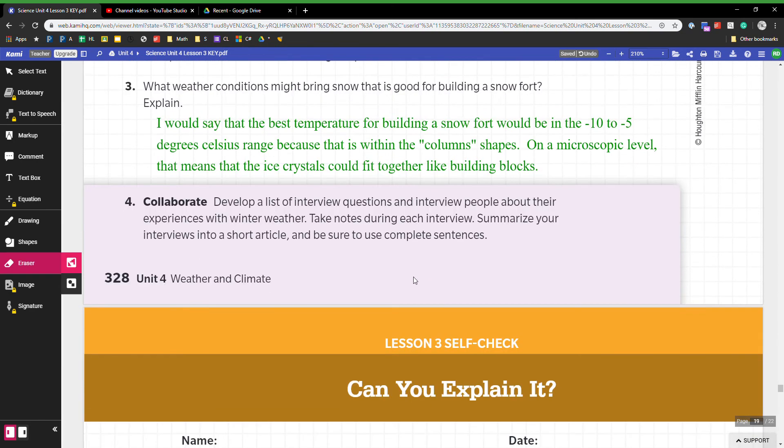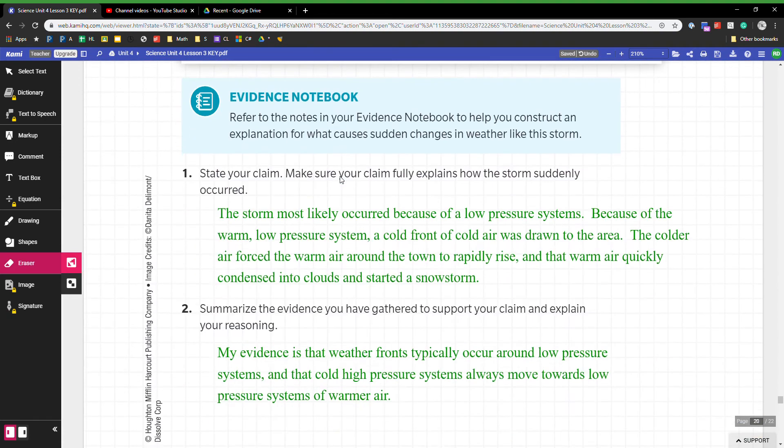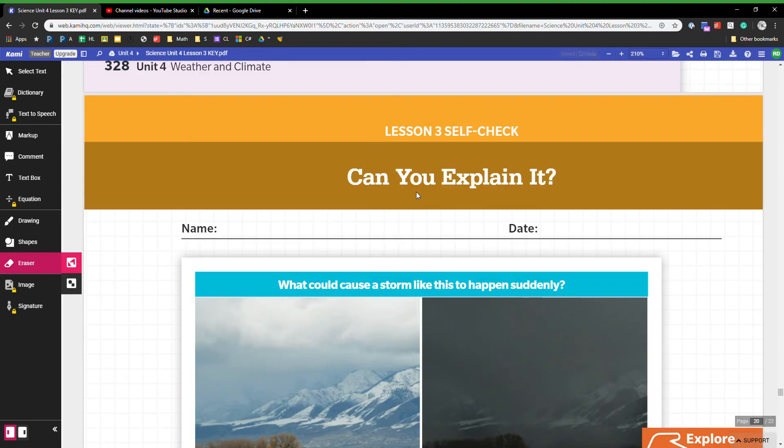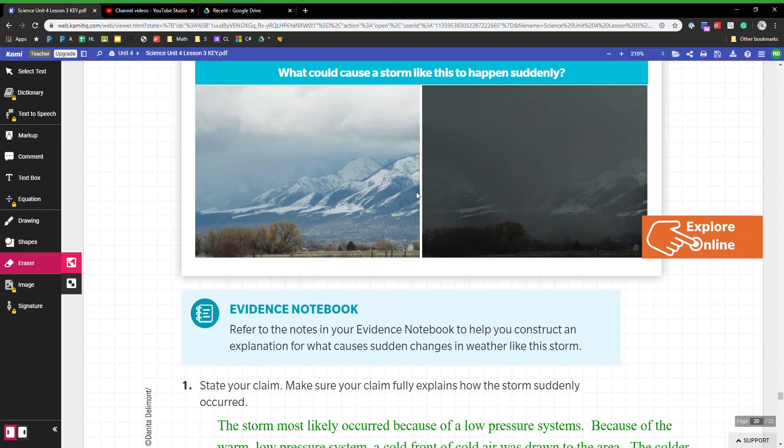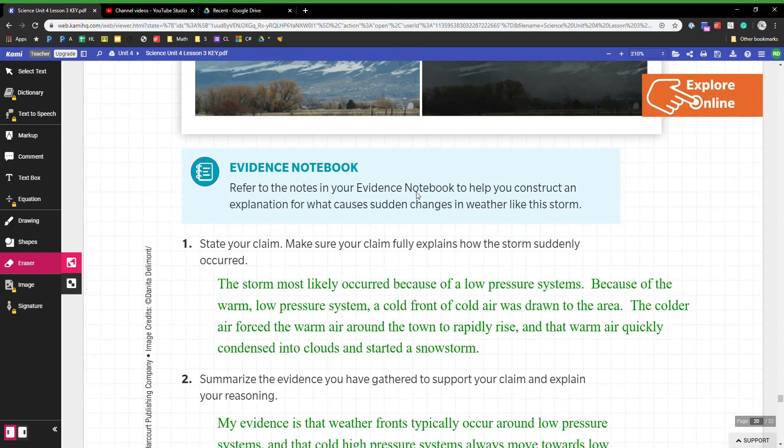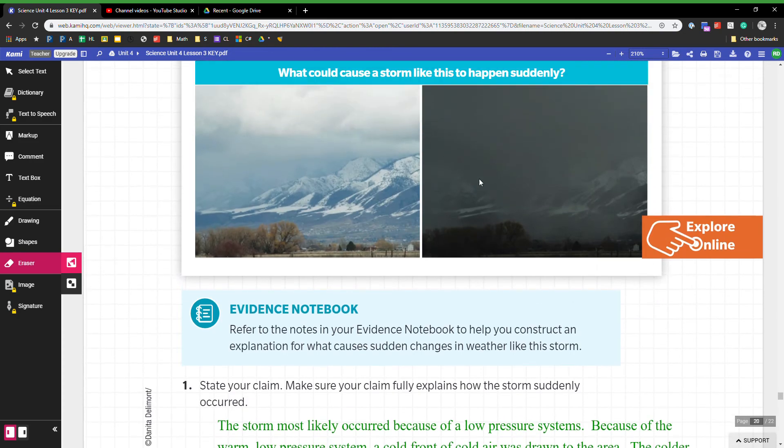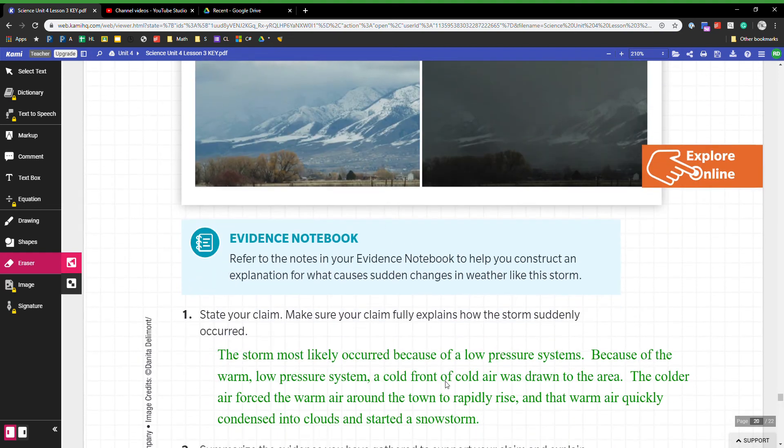This thing was just to ask people things separately. Obviously I'll do the self-check as part of this one too. Make sure your claim fully explains how the storm suddenly occurred. This is going back to this original city in Utah. I said that the storm most likely occurred because of low pressure systems.